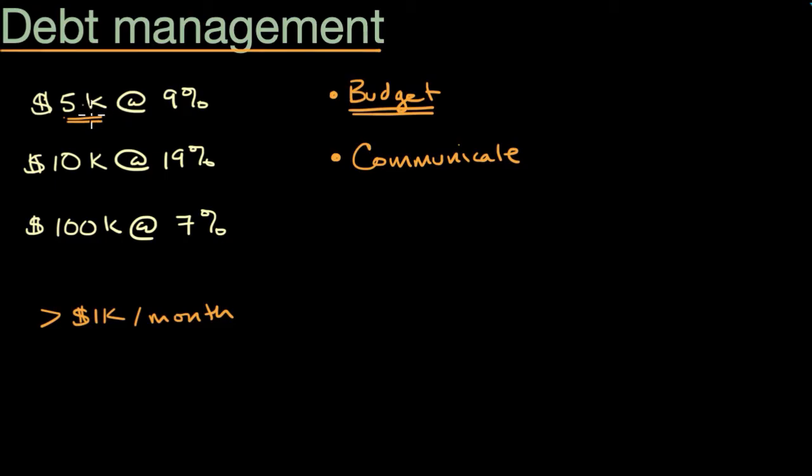That's psychologically powerful because you can get rid of that debt faster than the other debts. The more rational approach is to pay off the most expensive debt first - this one at 19% interest. Maybe that's credit card debt.